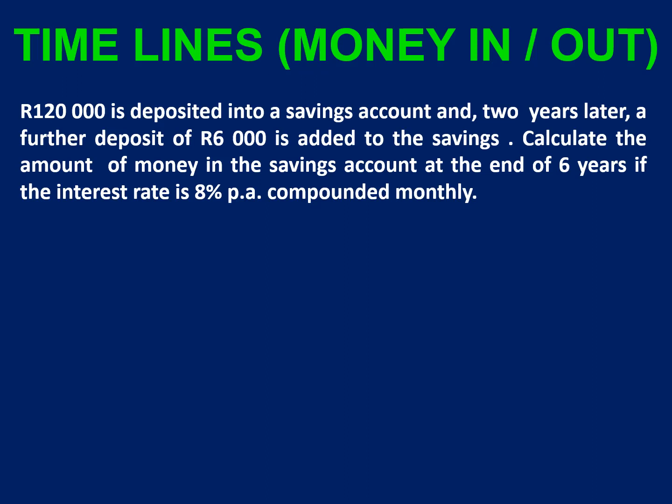There are two types of timelines that you can be asked in your financial maths questions. The first one is if additional money is going in or out of the account. In this case, R120,000 is deposited into a savings account and two years later, a further deposit of R6,000 is added. Calculate the amount of money in the savings account at the end of six years if the interest rate is 8% per annum compounded monthly.